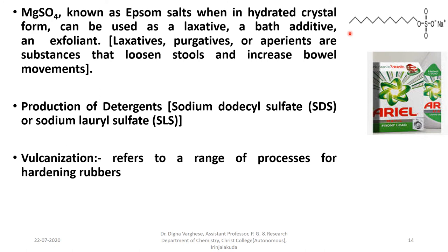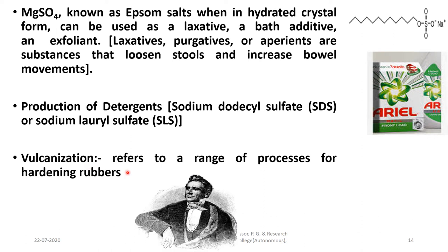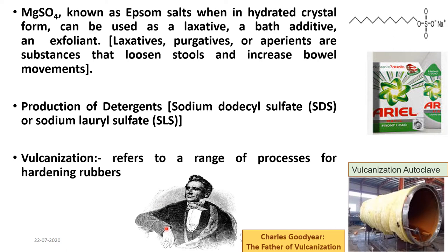Another important application of sulphur is in vulcanization — a range of processes for hardening rubbers. Vulcanization was introduced by Charles Goodyear, known as the father of vulcanization. The image shows a vulcanization autoclave.